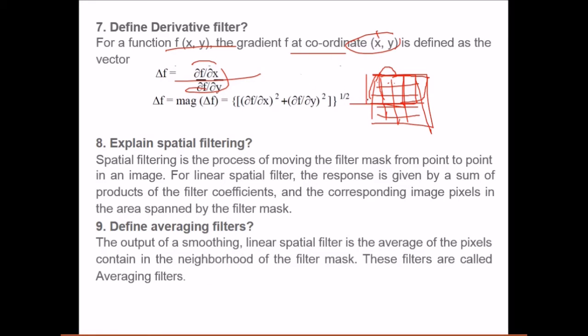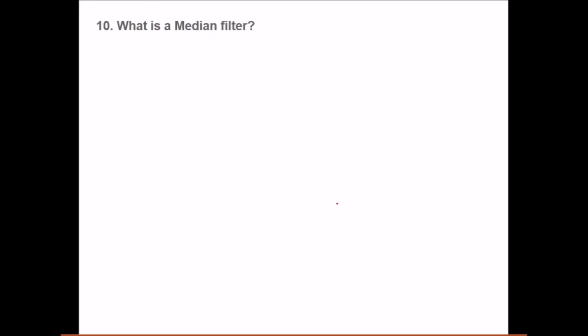Average filters. Once you apply this linear spatial filter, if the output is smoothing, that is if you average the pixels, you just add them and divide by the number. If the mask is 3 by 3, there are 9 values, so divide by 9. This contains the neighborhood of the filter mask. These filters are called averaging filters.